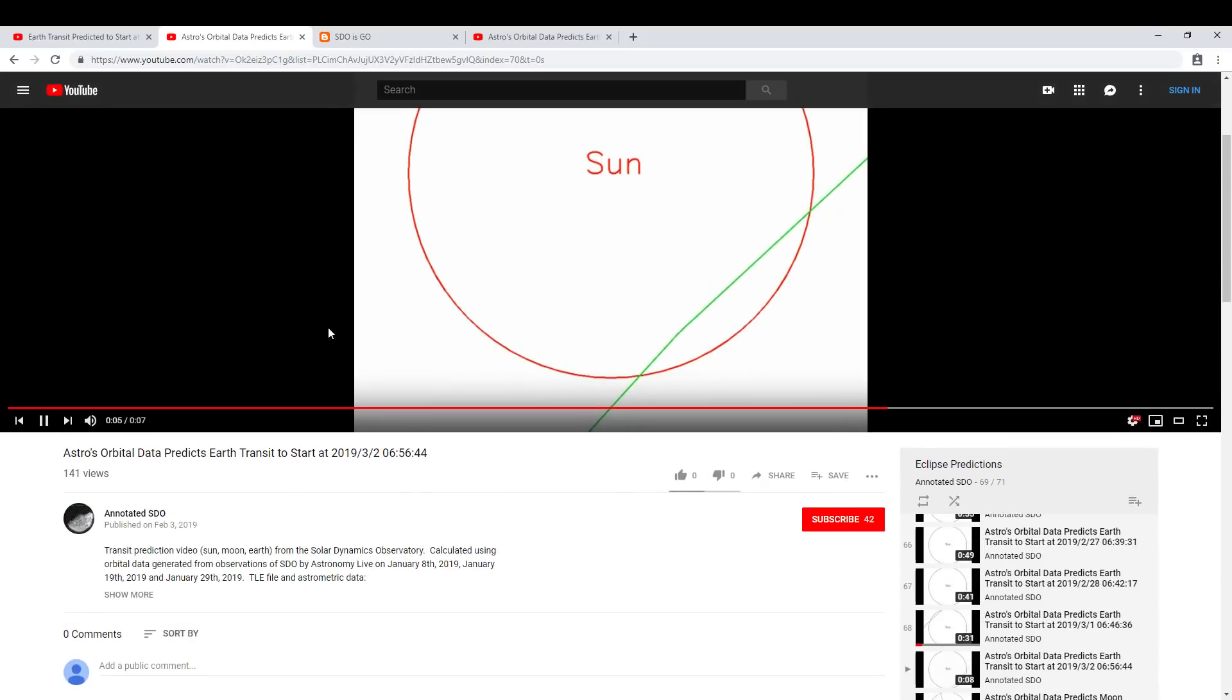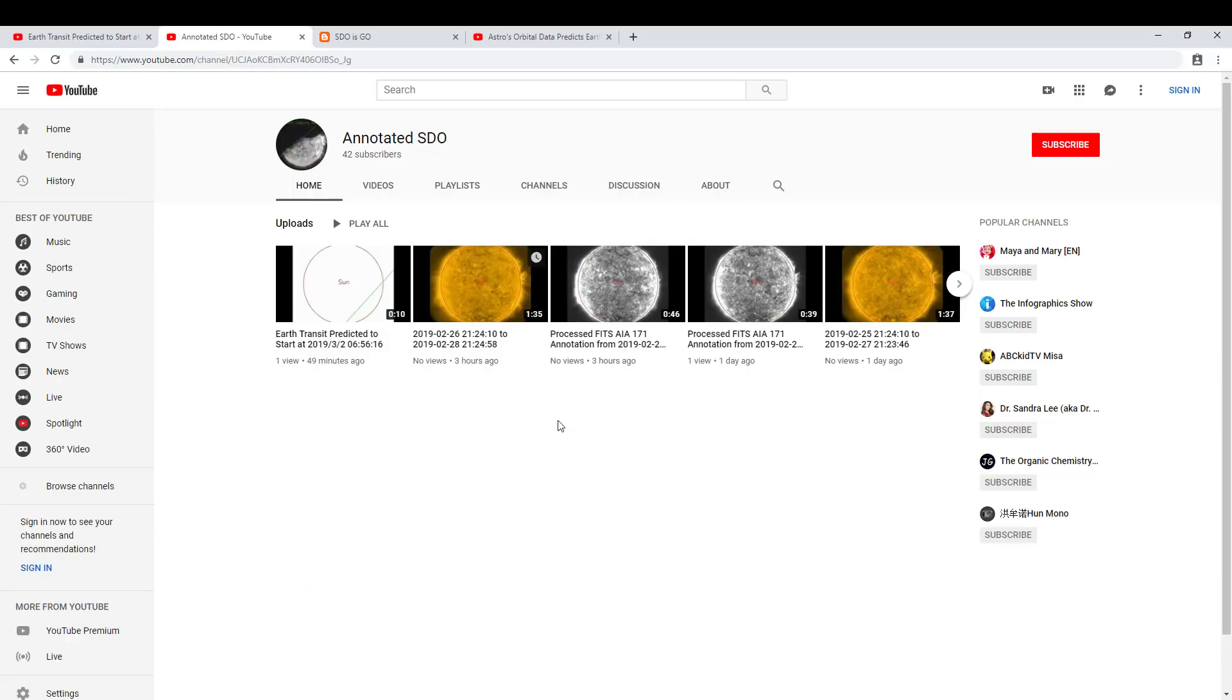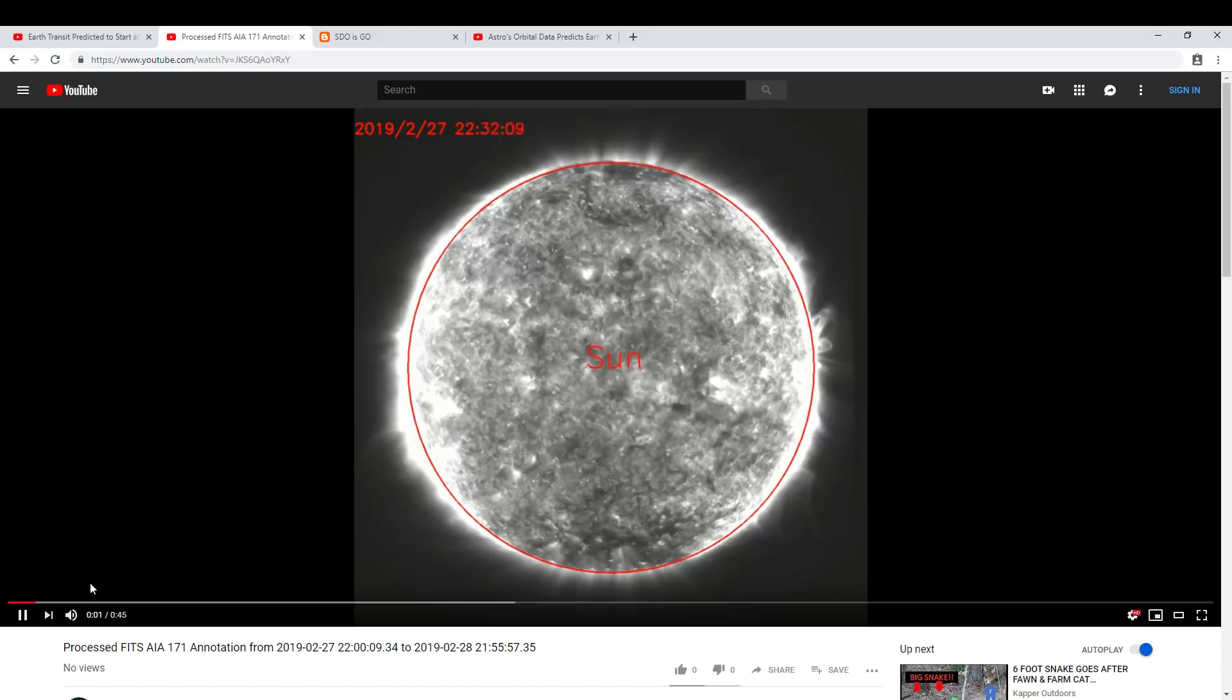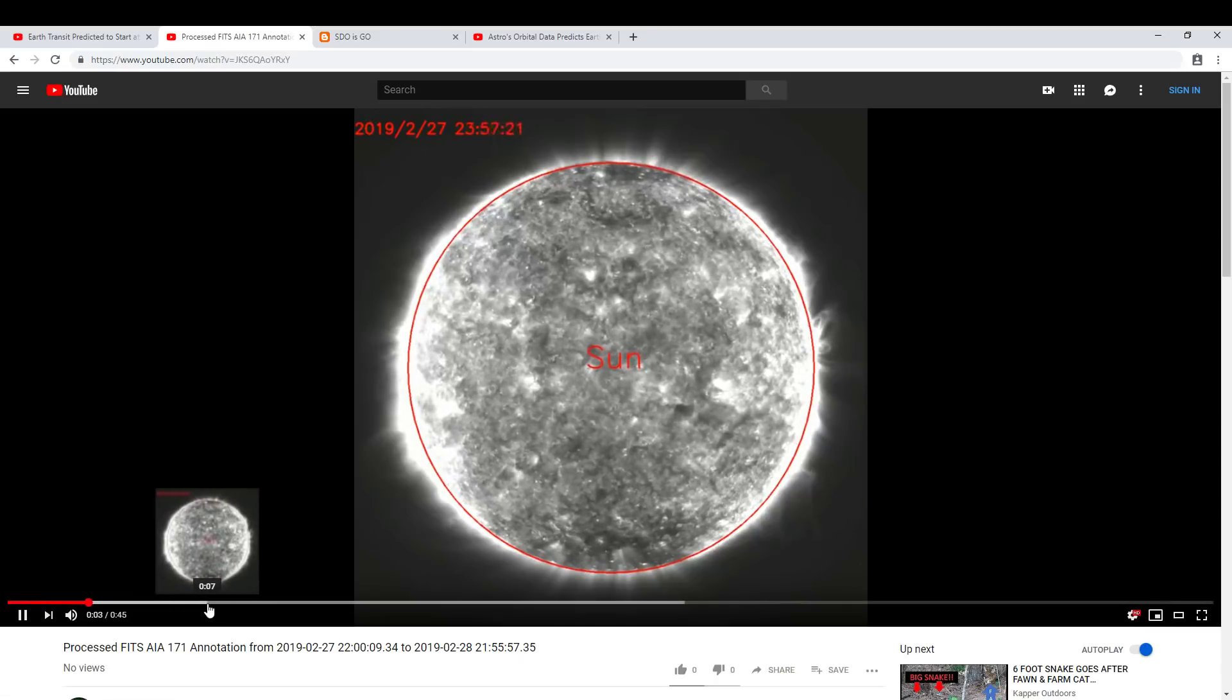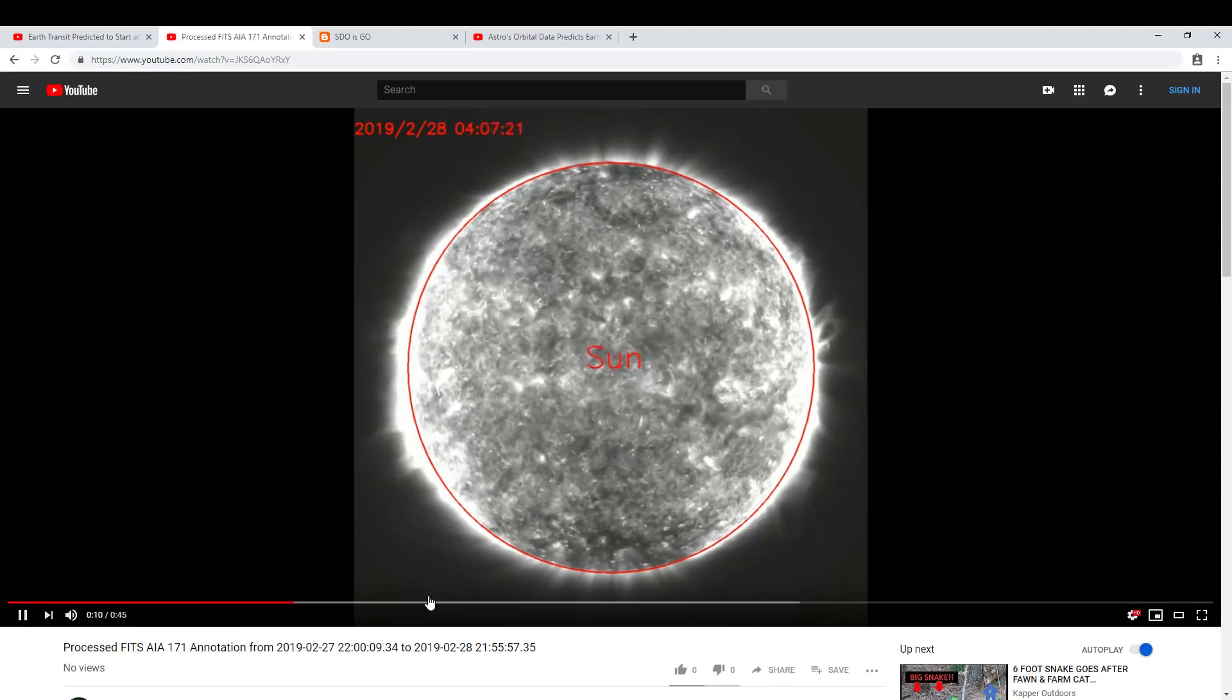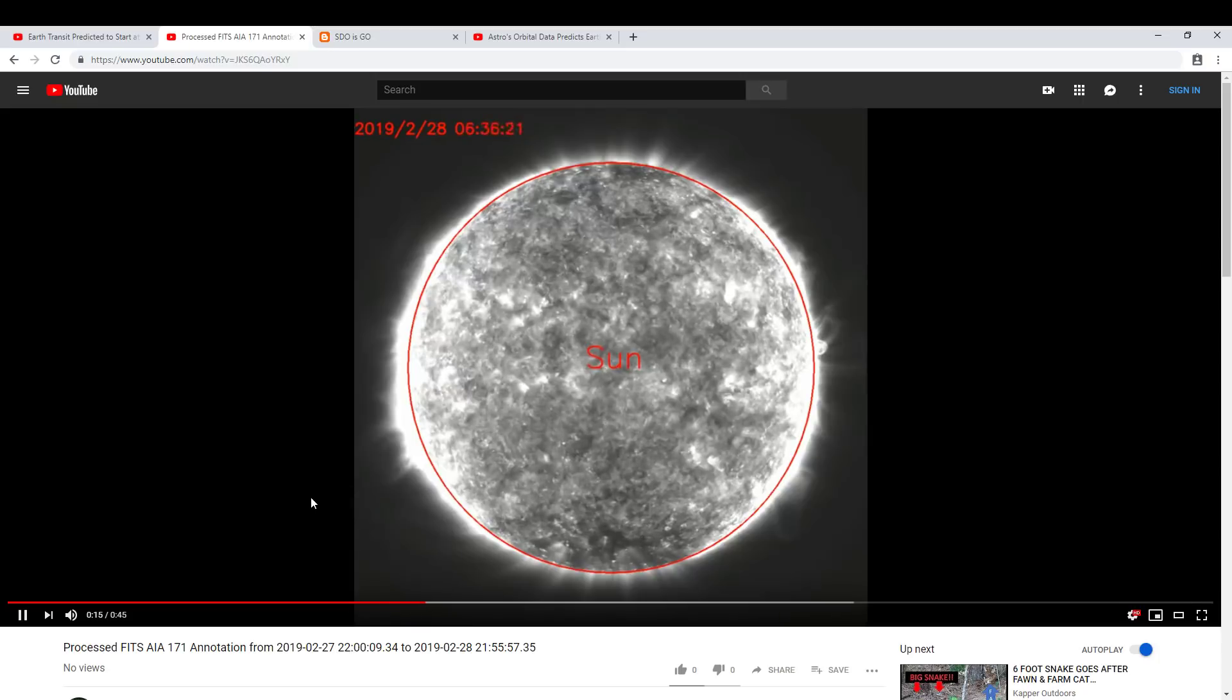For example, if you go to the annotated SDO YouTube channel, you'll see the latest videos, including some annotations of the current day's images. If we view this, let's skip ahead to about the time the eclipse was occurring.